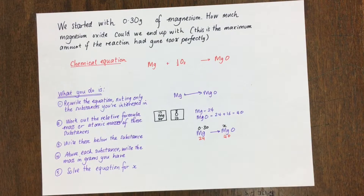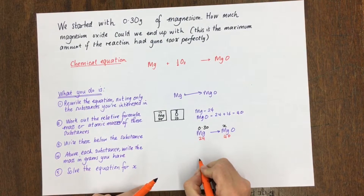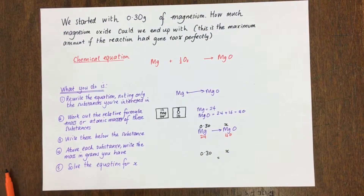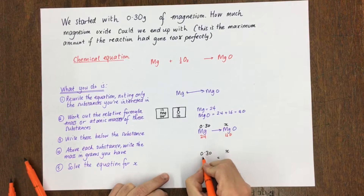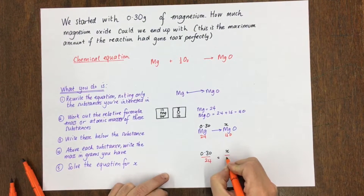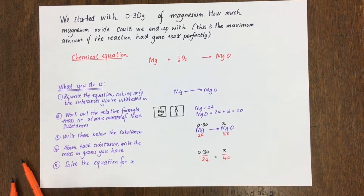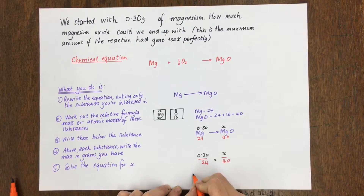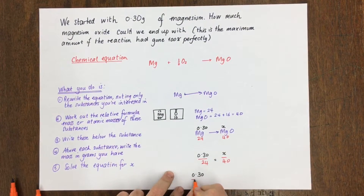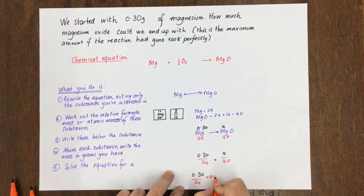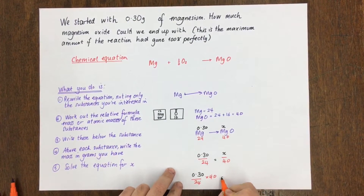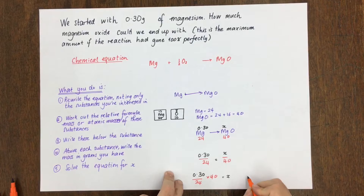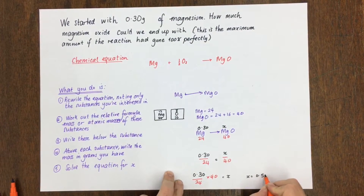Step five: solve the equation for x. So we're going to rewrite this as 0.30 over 24 equals x over 40. We're going to solve this by multiplying both sides by 40, so: 0.30 divided by 24, times 40, equals x. Put that into a calculator and you'll find that x equals 0.50 grams.